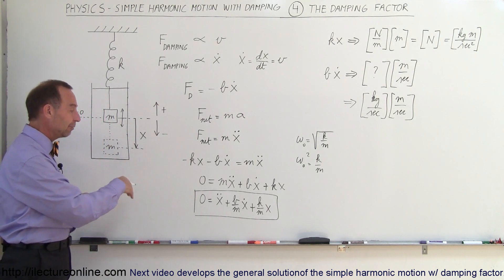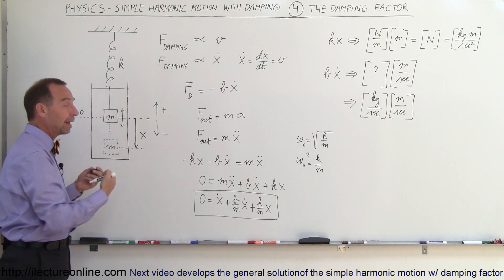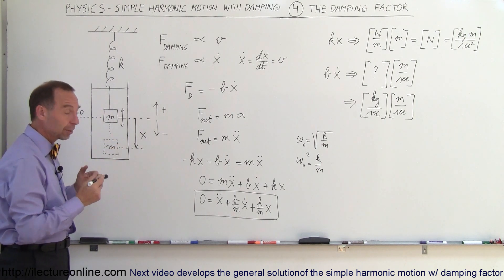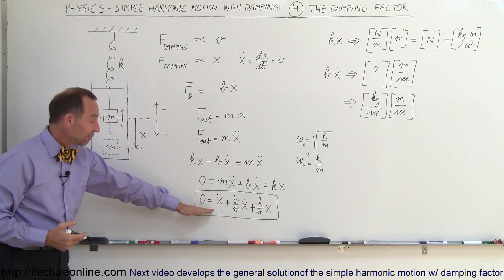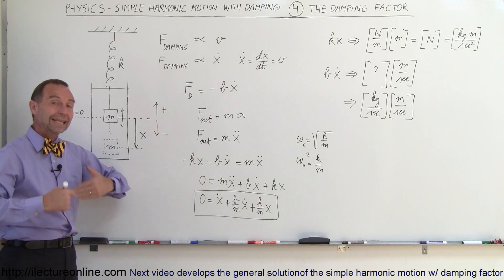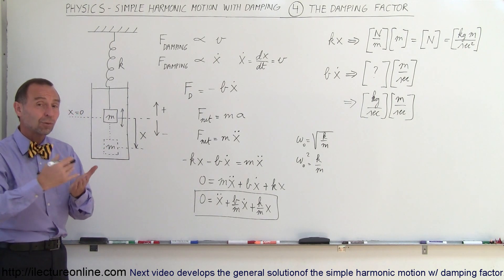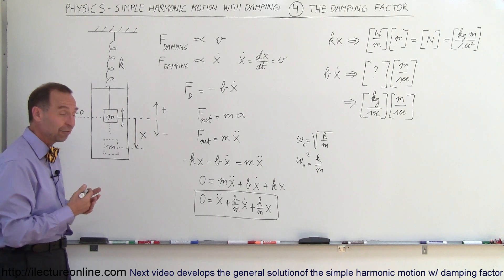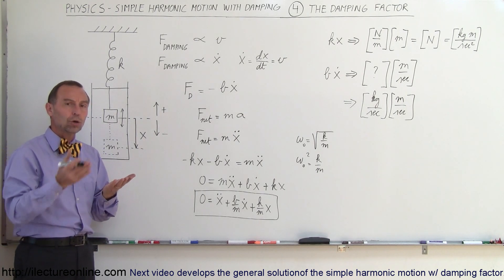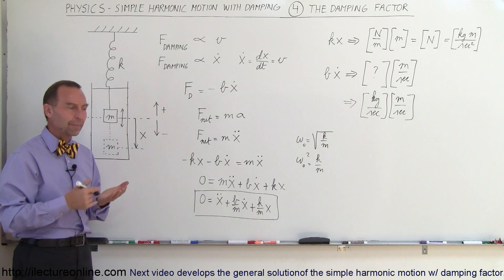This now becomes the differential equation that defines the motion with damping included. So now to solve that, if we want to know how to figure out things with simple harmonic motion with damping involved, we have to find the general solution to this equation and then apply that to the various cases. With damping, we can have overdamping, underdamping, or critical damping.